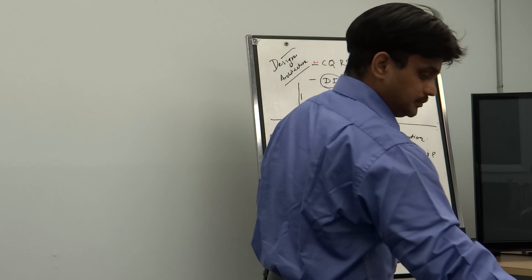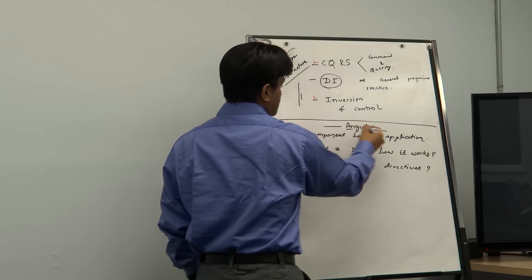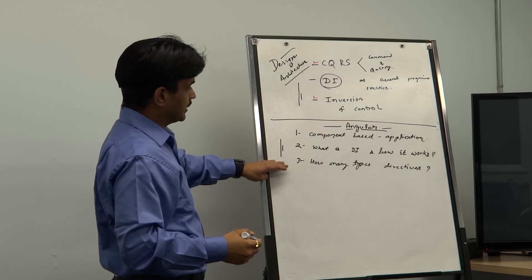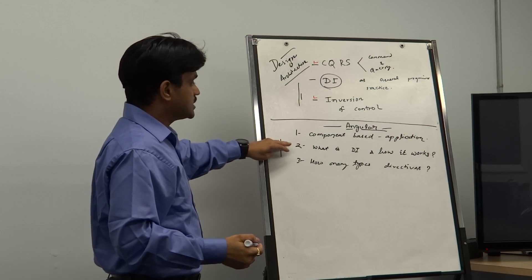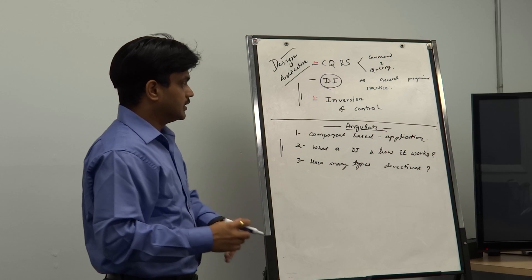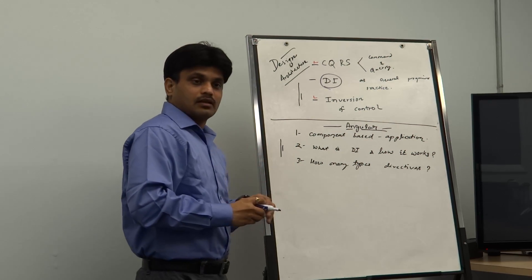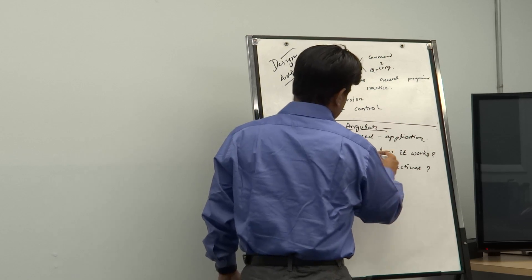And then, once we do DI, then in the Angular what we should do is like there are three things that we are thinking. One is component based application, what exactly it is. And what is DI and how it works in Angular. And how many types of directives are there. These are the things that we want to cover. So let's do again here in the DI part.